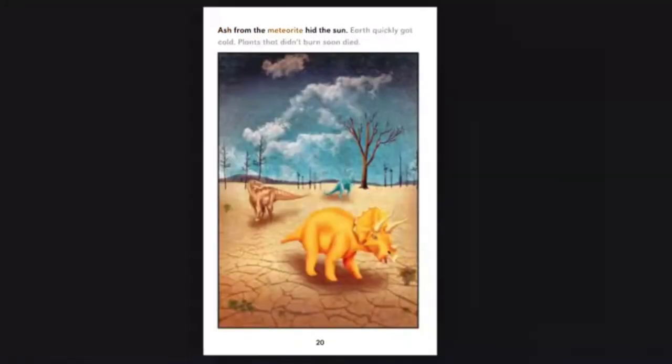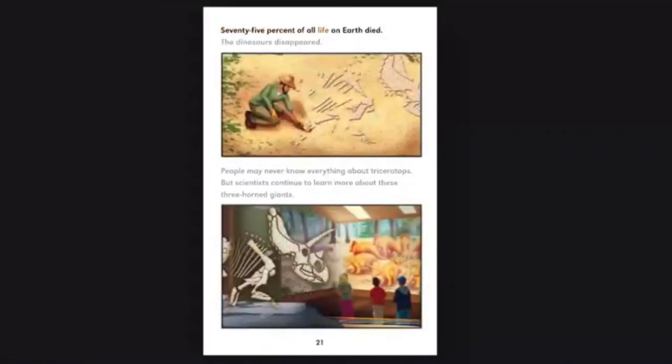Ash from the meteorite hid the sun. Earth quickly got cold. Plants that didn't burn soon died. 75% of all life on Earth died. The dinosaurs disappeared. People may never know everything about Triceratops, but scientists continue to learn more about these three-horned giants.